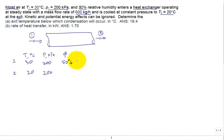So to solve for part A, we have to find that temperature below which condensation will occur. That's a fancy way of just saying calculate the dew point temperature for the inlet condition. So what's our dew point temperature for the inlet condition state 1? Well, how do I calculate that dew point temperature?